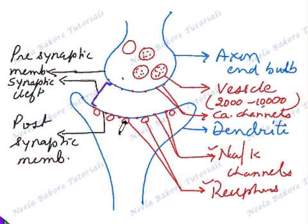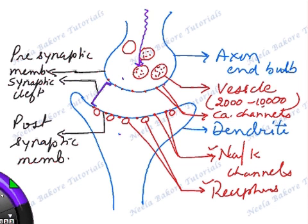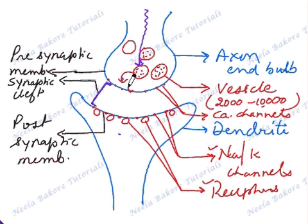and the impulse reaches up to the axon end bulb, to help these vesicles, they will come closer to the membrane and rupture, releasing neurotransmitter. Say in this case the neurotransmitter is acetylcholine.